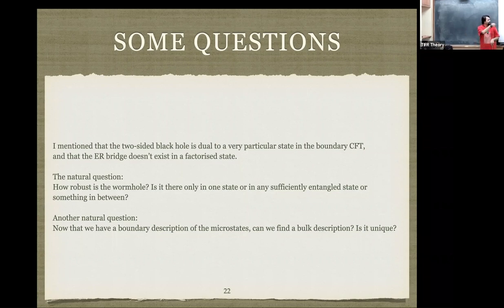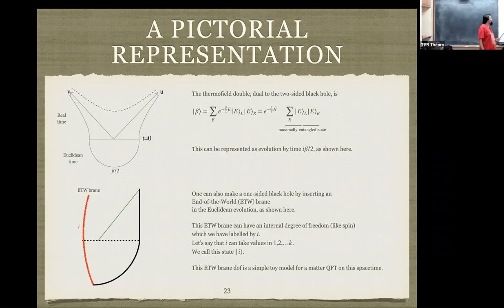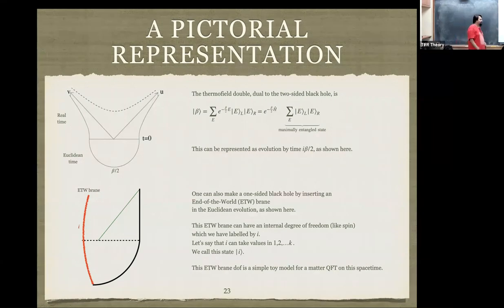Let me tell you one way of at least partly answering the robustness question. The thermofield double state, which is dual to the two-sided black hole, is represented diagrammatically as a beta/2 amount of Euclidean evolution followed by real-time evolution. You can get a class of one-sided black holes by projecting this Euclidean evolution, which leaves you with one-sided black holes. One particular example of such a projection creates an end-of-the-world brane — exactly what it sounds like: you go there, you can't go back, there's nothing on the other side.